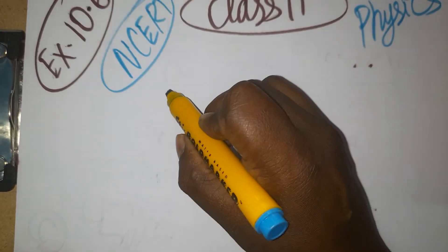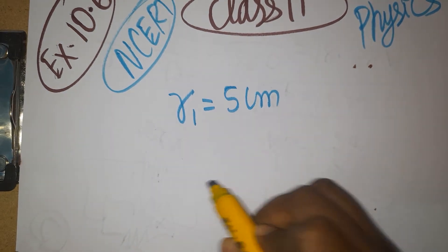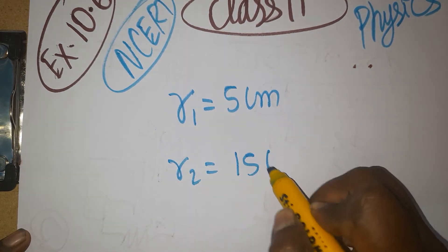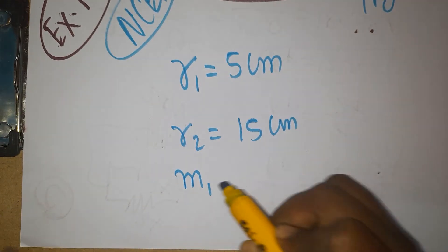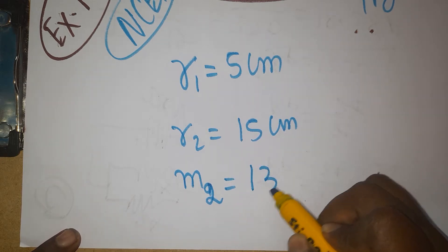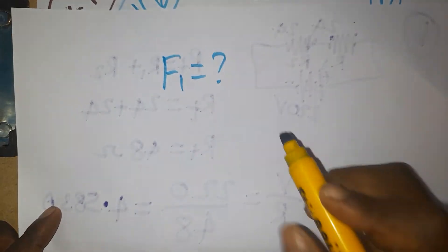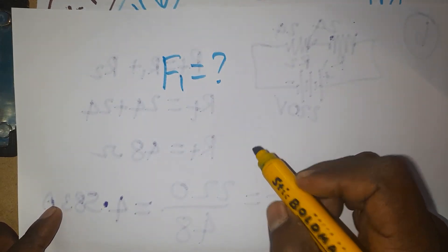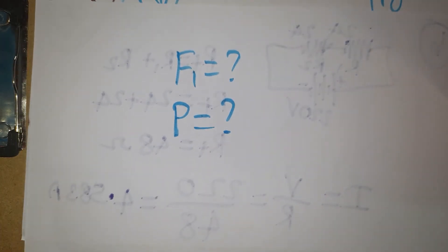The smaller radius of the piston is given as 5 centimeters, and the bigger radius of the piston is 15 centimeters. The mass of the heavier object on the left side is 1350 kg. The two questions asked are: what force is required to lift this mass, and what pressure is acting?